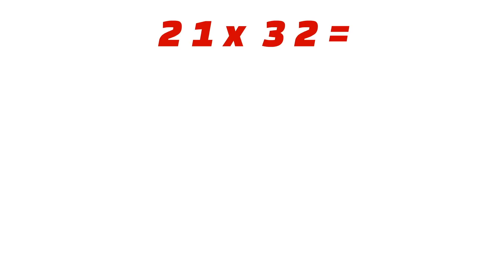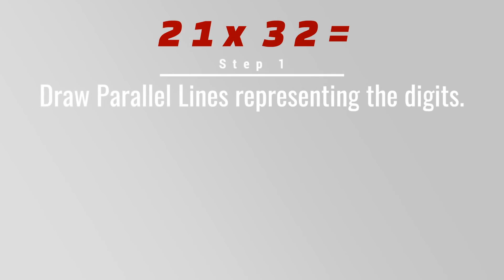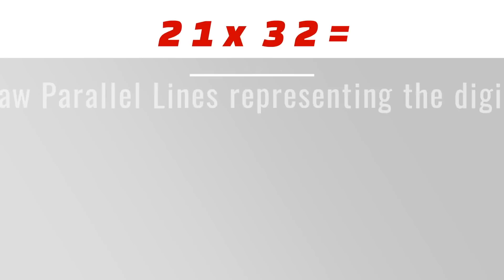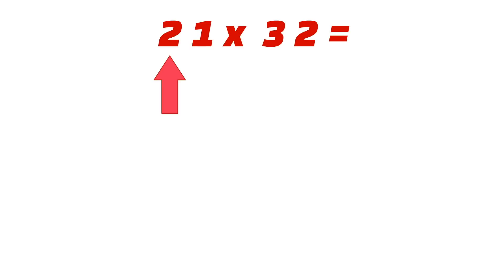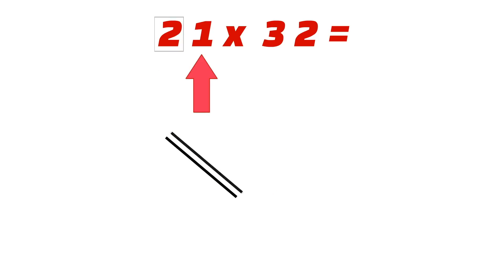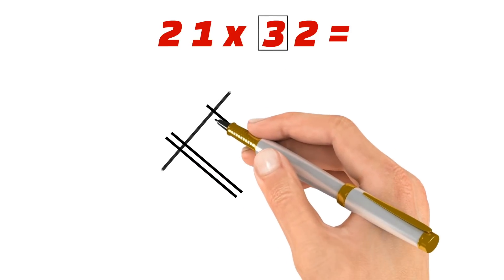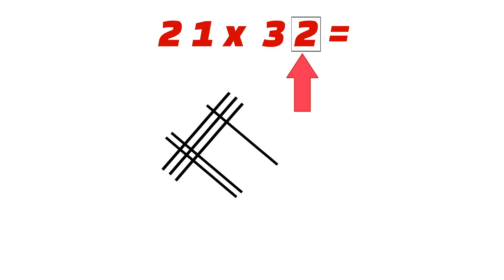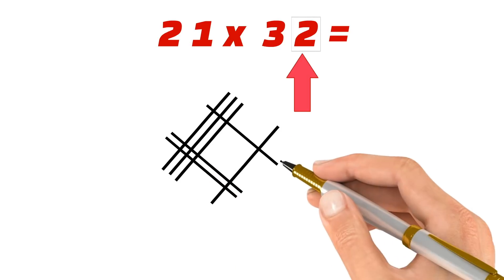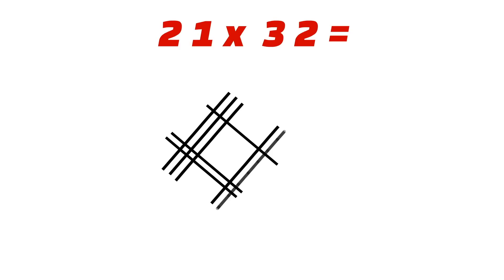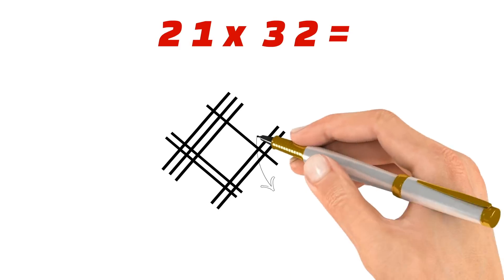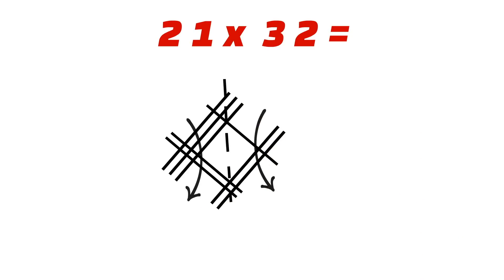Let's say we would like to multiply 21 by 32. In this method we are supposed to draw parallel lines representing each digit of the number. The first number is 21, so we draw two parallel lines, then leave some space and draw one line parallel to the previous lines. For the number 32, the first digit is 3, so we draw three parallel lines perpendicular to the first set. Then we leave some space and draw two more lines. Now we group together the intersection points starting from the right-hand side.